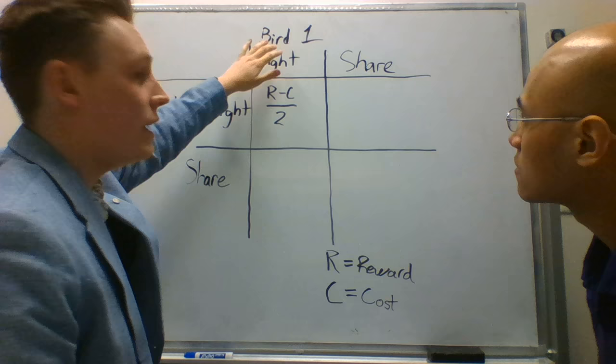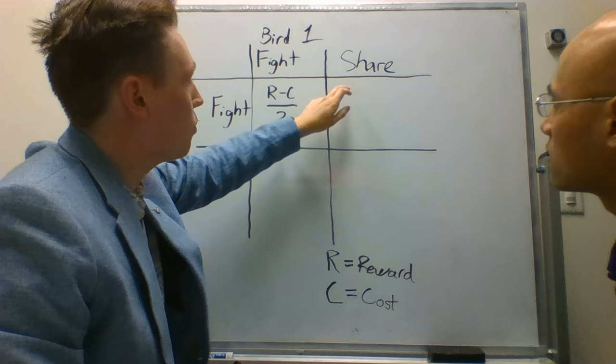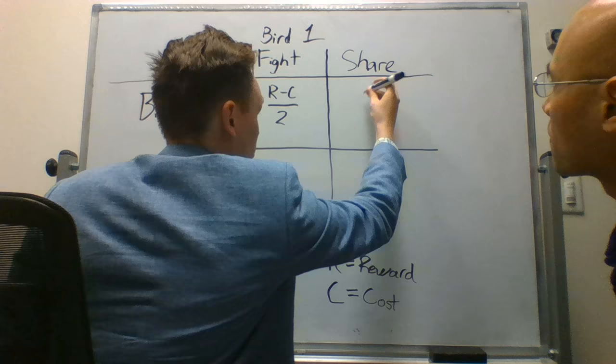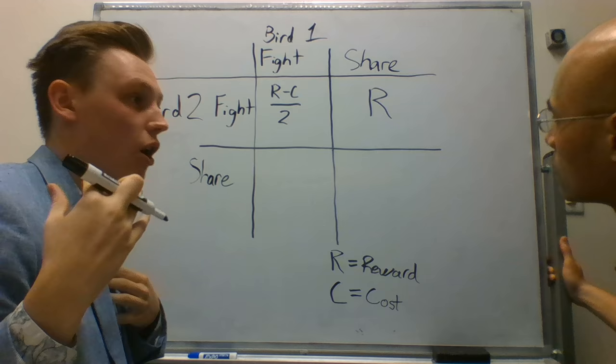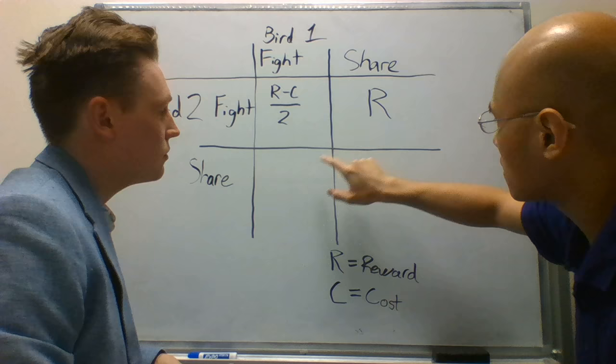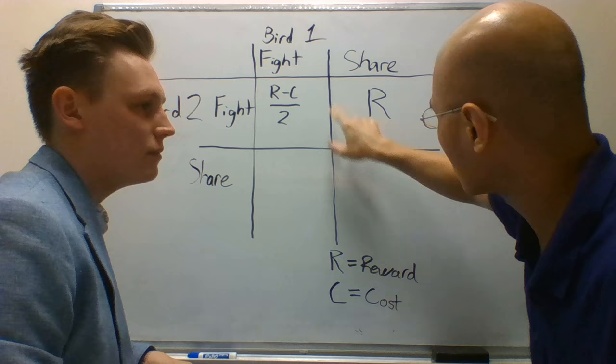In our next scenario, bird two encounters bird one — bird two is a fighter, bird one is a sharer, meaning he does not want to fight at all. In this scenario, bird two wins the whole reward because the sharer will see the aggression and will leave, not wanting to spend the time or endure the cost. The payoffs in these matrices are what happens to bird number two. So the end result here is the whole reward, because it goes entirely to bird number two.